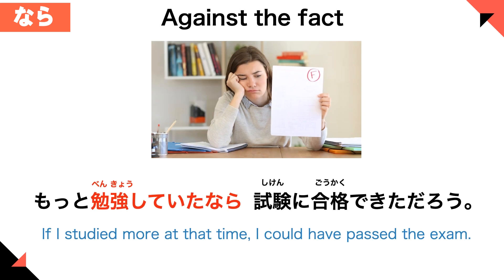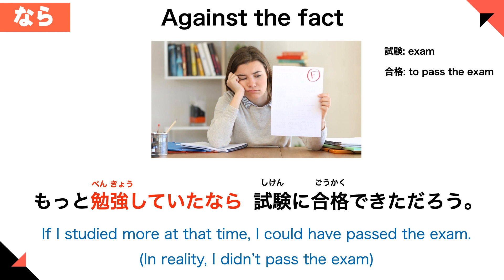Let's look at more example sentences showing against-the-fact usage. 'Motto benkyou shite ita nara, shiken ni goukaku dekita darou.' If I had studied more at that time, I could have passed the exam — but in reality, I didn't pass the exam. That's why you can use nara for a past sentence when it's against the fact.